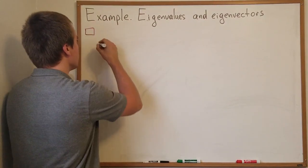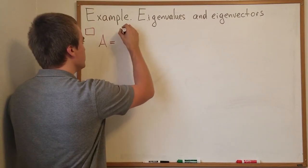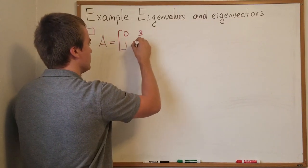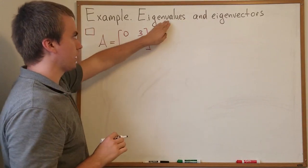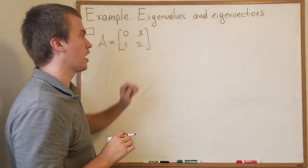So let's assume take A from my previous video, it's just a matrix 0, 3, 1, 2. And for this matrix I want to find all eigenvalues and all corresponding eigenvectors.